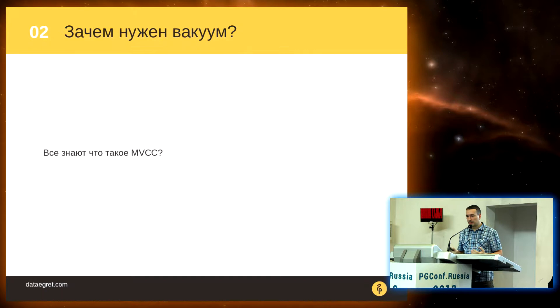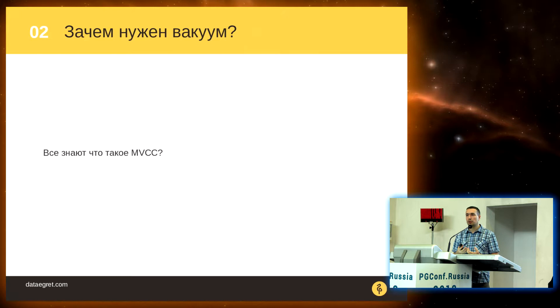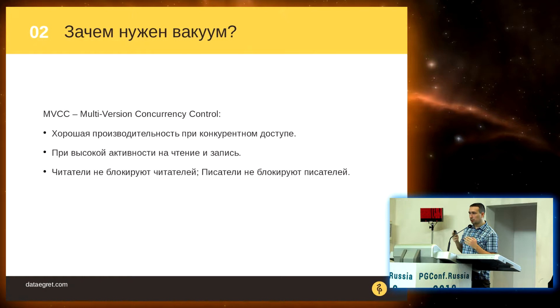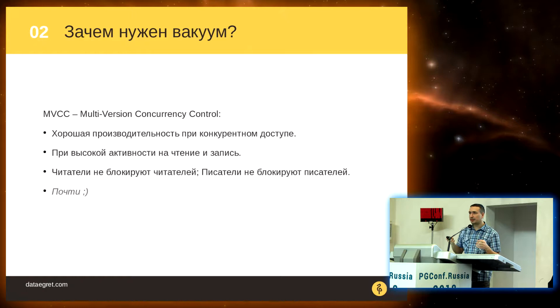First of all, I would like to start with MVCC. Please raise your hands if you know what it is. MVCC, briefly speaking, is the database engine — the Postgres engine. That is how the database provides data to clients. This engine is high performance and provides for high concurrency. Clients can connect to a database and performance for read and write is really very good. Writers and readers do not block each other, apart from some limited situations when there are intentional blocks.